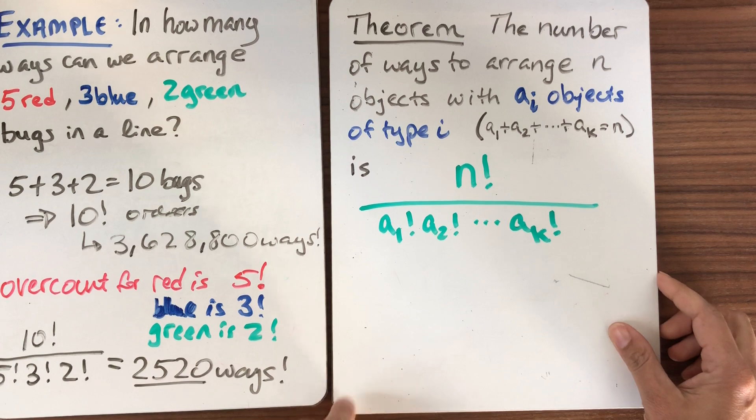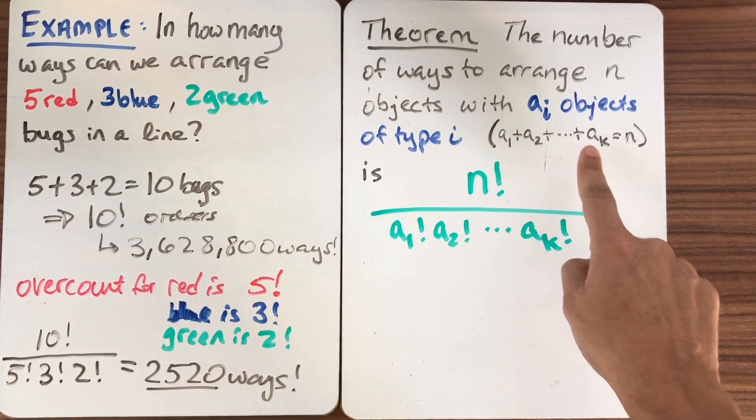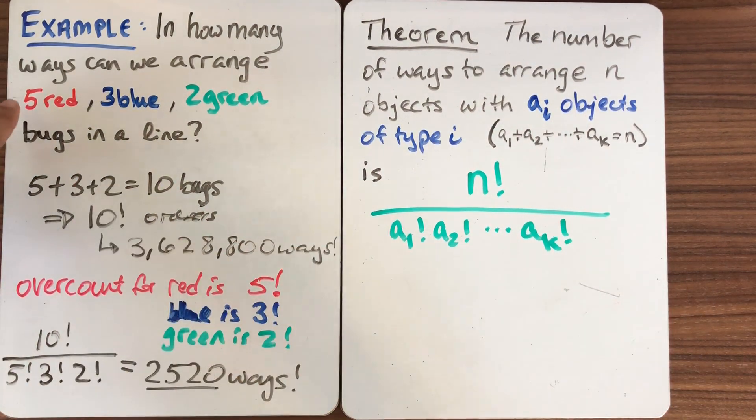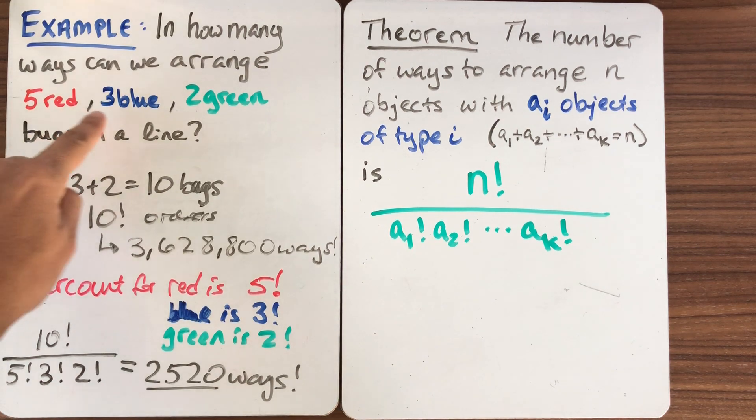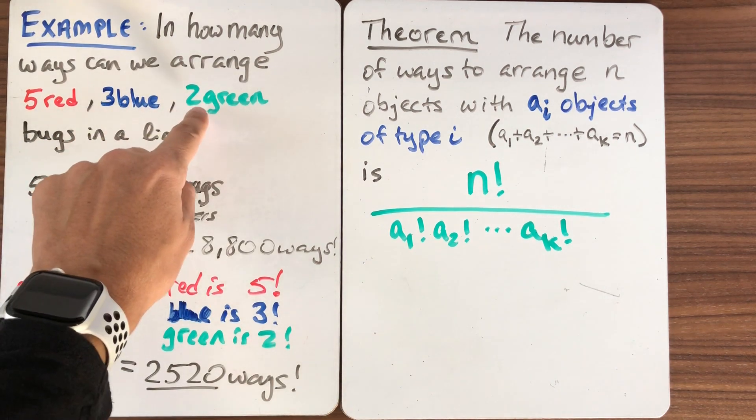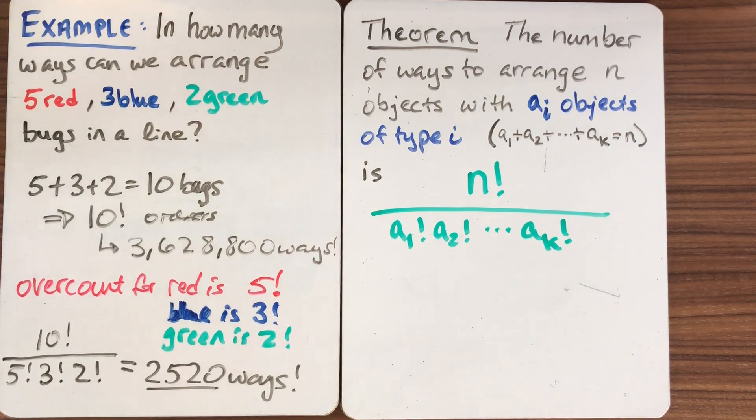if we take n objects, and we have objects of different types. Here, I had a1 is 5, a2 is 3, and a3 is 2. Maybe that's worth writing down.